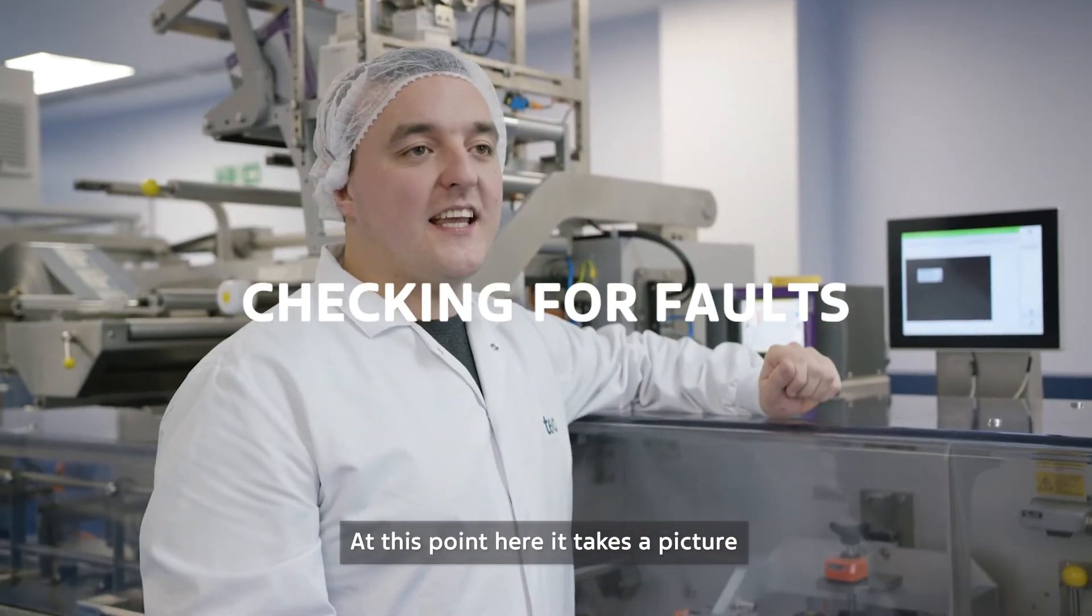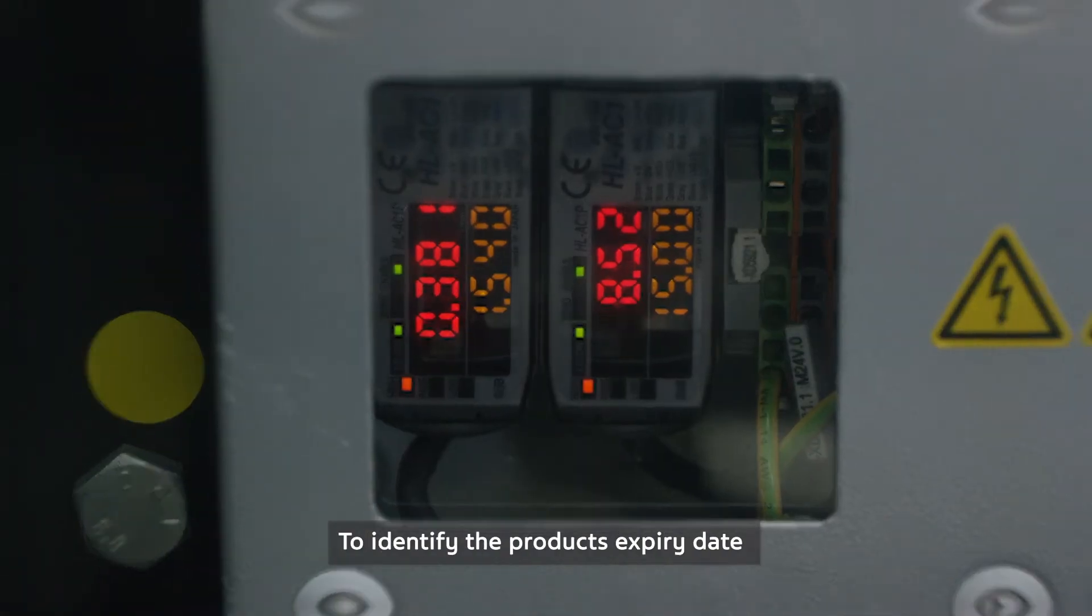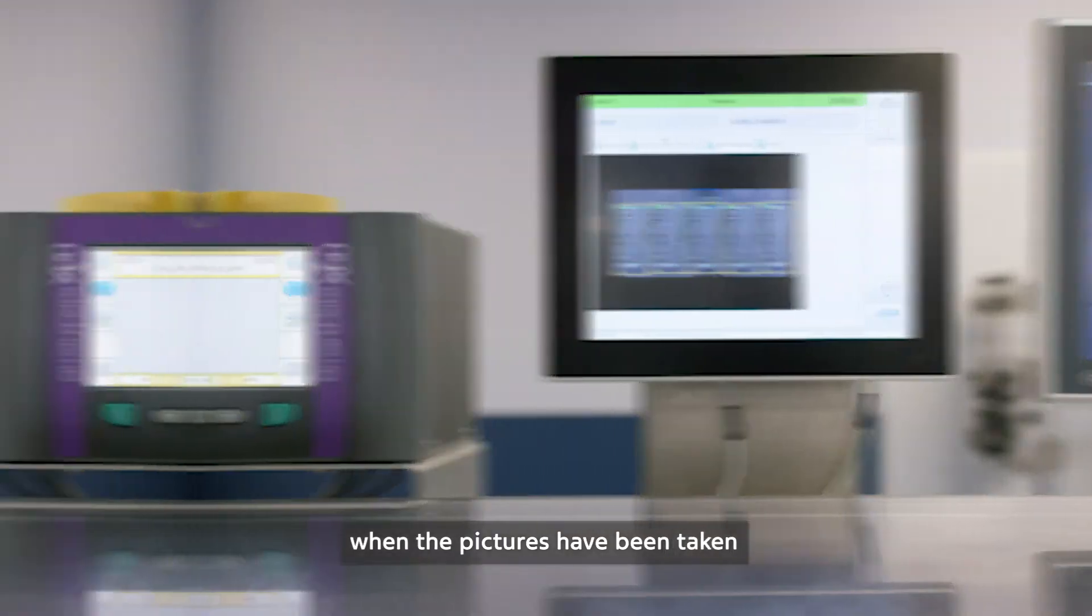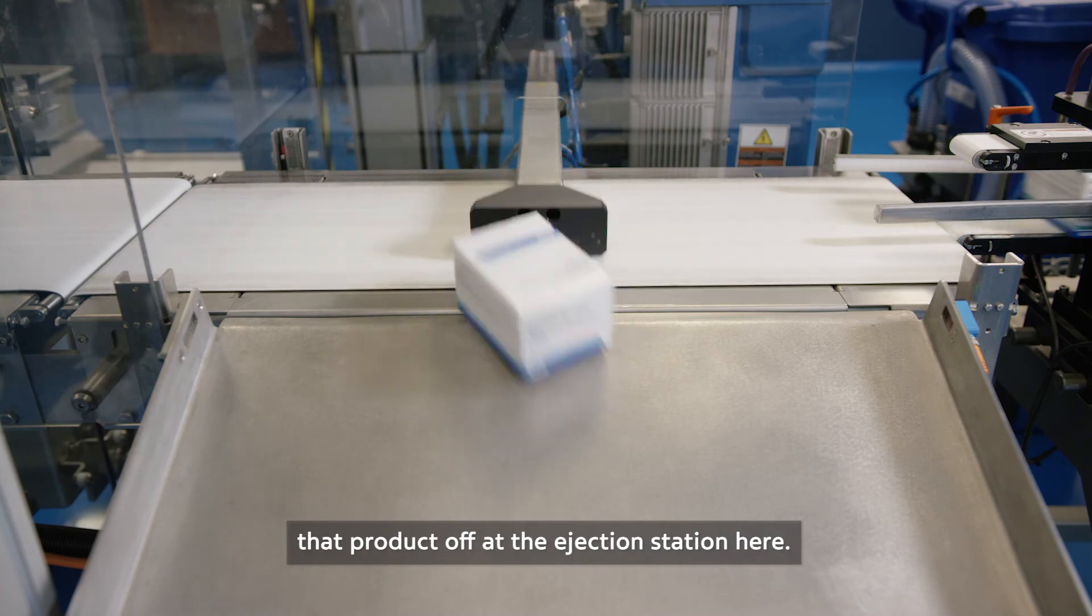At this point here, it takes a picture of the variable data that is being applied to the foil pouch to identify the product's expiry date and batch number. When the pictures have been taken, it recognizes if there's any fault with the picture and it ejects that product off at this ejection station here.